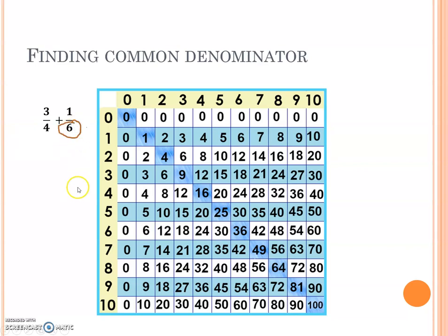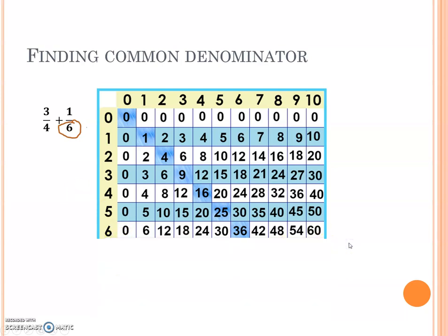Start with the bigger denominator. Find it on the times tables chart. You might want to put a card or paper underneath to make it easier to see.